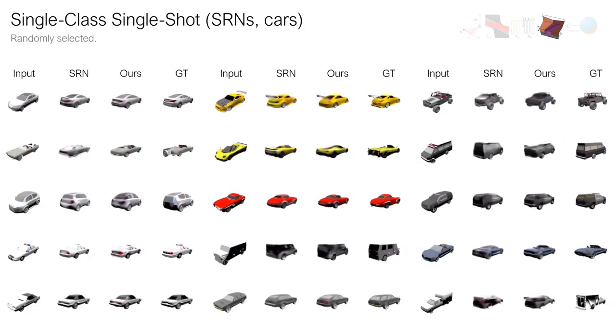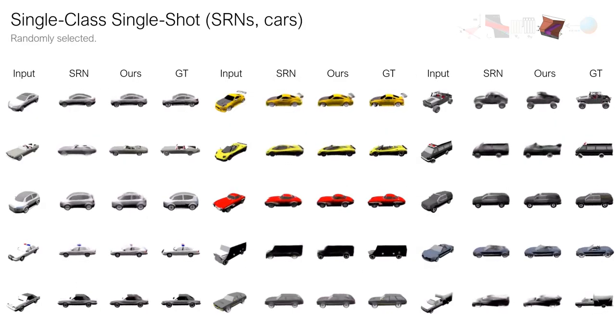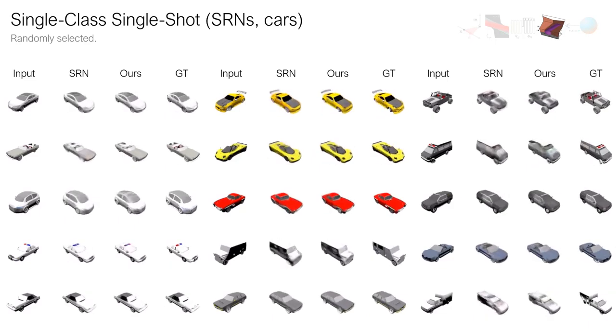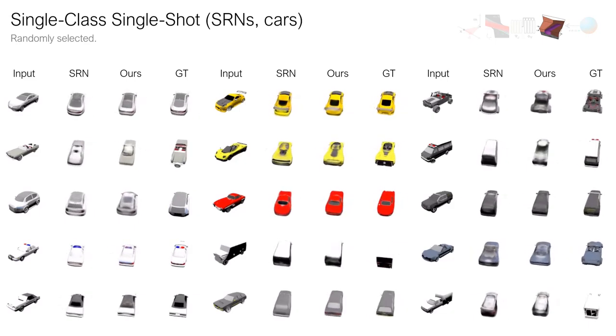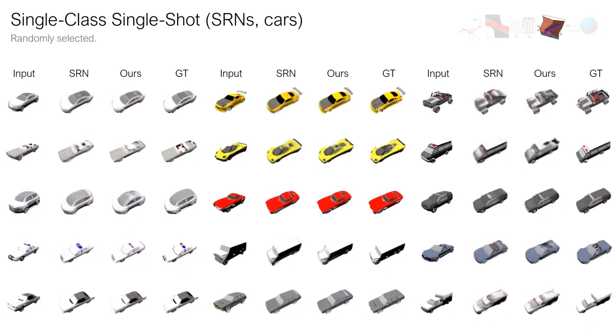Next, we benchmark LFNs with scene representation networks on single-shot, single-class reconstruction. On shape-net cars, LFNs outperform SRNs, offering slightly more detail.